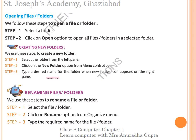Next, how to rename a file or folder. These are the steps to rename a file or folder. Step 1: select the file or folder. Step 2: click on Rename option from Organize menu. Step 3: type the required name for the file or folder.